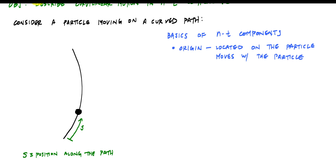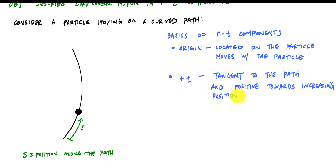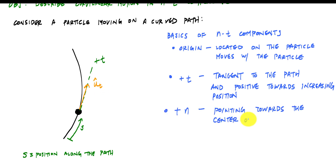The next thing is to define the positive sense of each component. First is the tangential component — just like the word itself, it is always tangent to the path, and it's positive in the direction of increasing position, or the direction the particle is moving. In this drawing, the positive T direction would be tangent to the path, pointing upward since the particle is moving up the curved path. We draw a unit vector u_t-hat to describe this direction. The positive normal direction is always perpendicular to the tangential component and points towards the center of curvature — 90 degrees toward it.